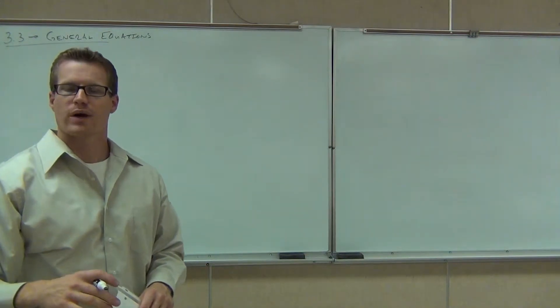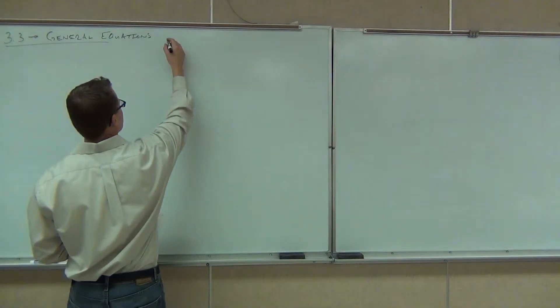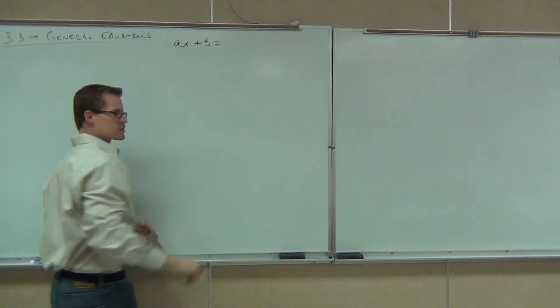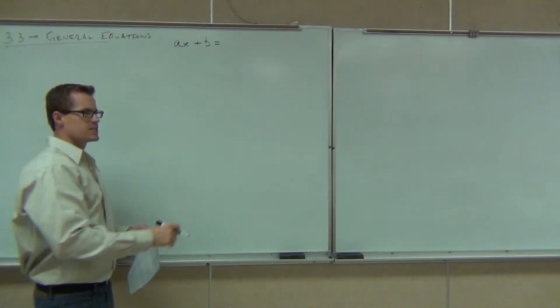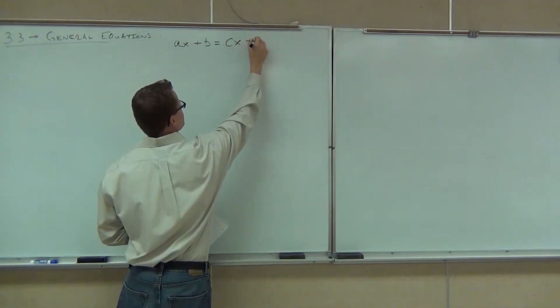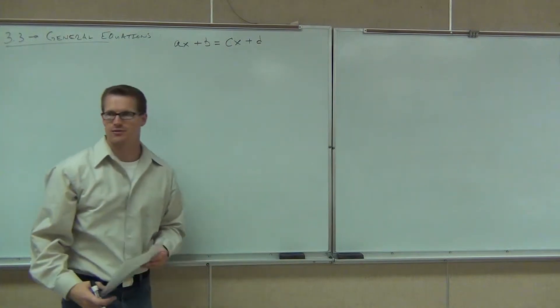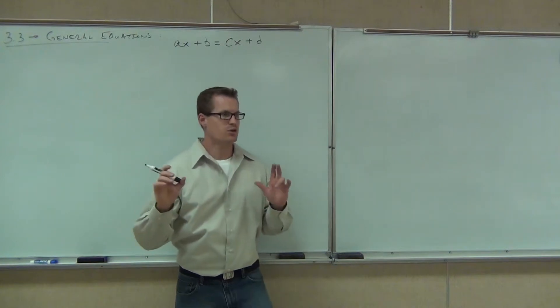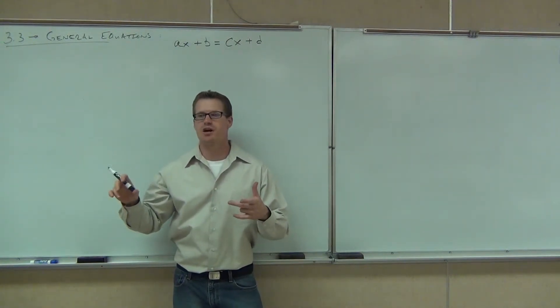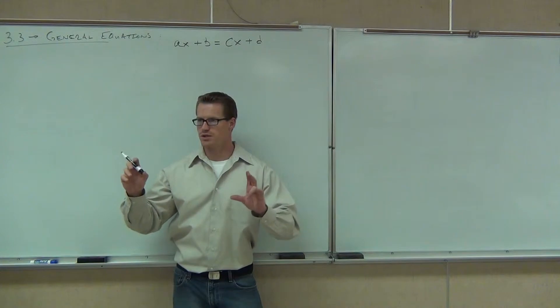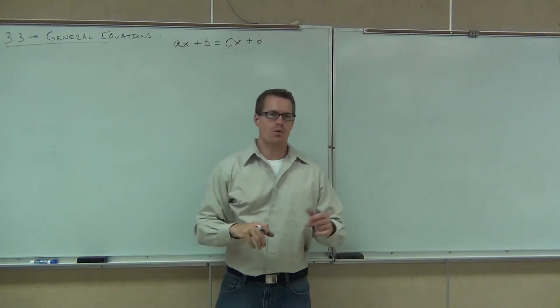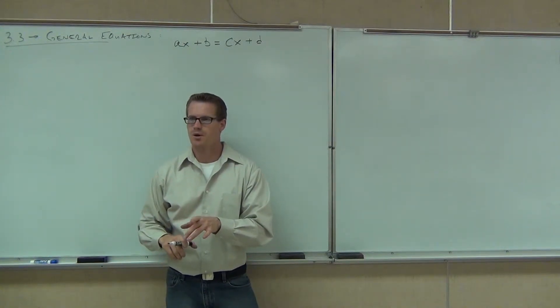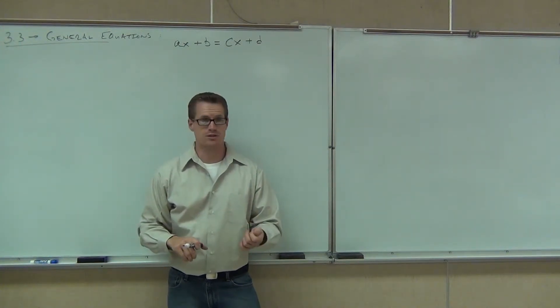Specifically, what I mean are equations of the form AX plus B equals CX plus D. All I mean by solving equations of this form is you have the same variable, but on both sides of your equation. So I have variables here and variables here, and we want to learn how to deal with those things. I want to give you some general steps on how to solve these.